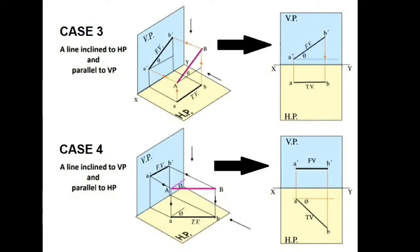In case number four, the line is parallel to HP but inclined to VP. The projection becomes the reverse of case number three. The front view is parallel to the XY line and the top view is inclined to the XY line at angle theta. In the front view, the shadow of the line is smaller than the actual length, giving the apparent length, whereas the top view shows the original true length of the line.